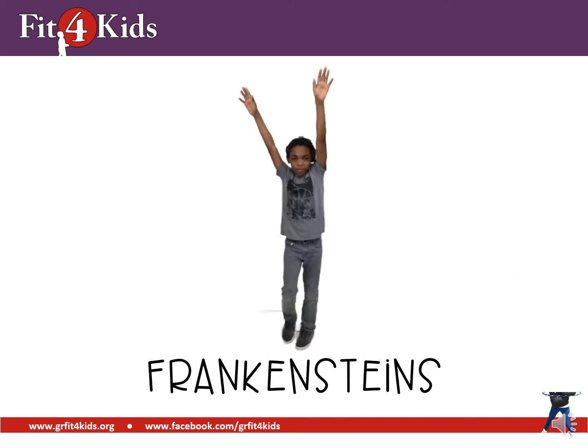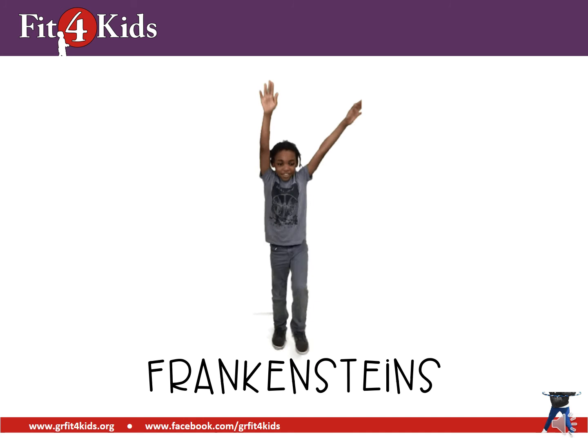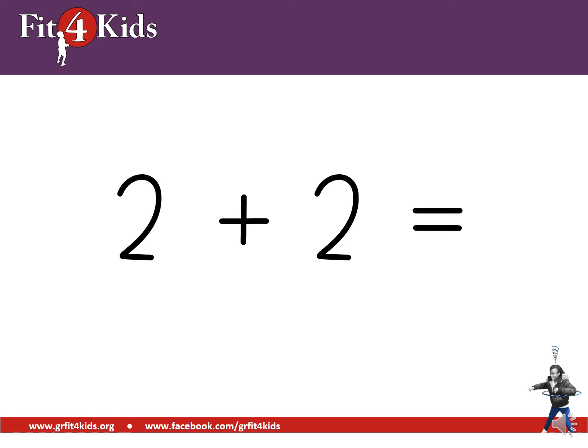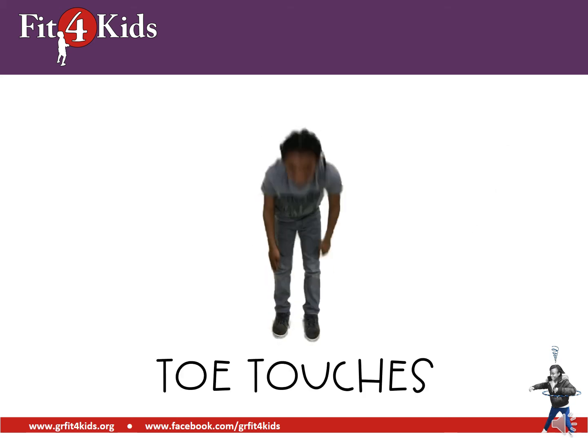Here we go. Frankenstein's. Two plus two equals four. Zero plus five equals five. Time to do toe touches.